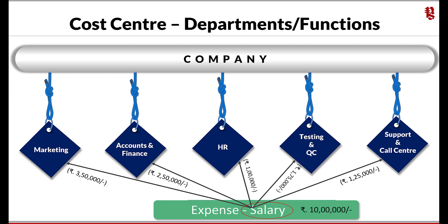With the cost center feature, we experienced that an amount can be allocated in proportion to various cost centers once. For example, the salary expenses of 10 lakh were allocated to each respective department as a cost center. However, the same amount cannot further be allocated to a parallel unit or cost center — in this case, branches. How do we handle this requirement?